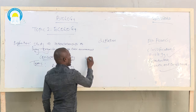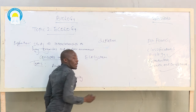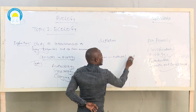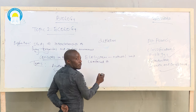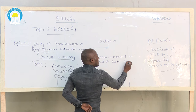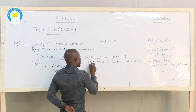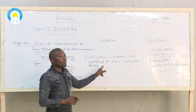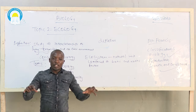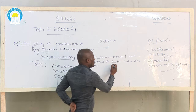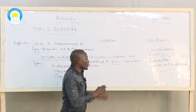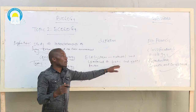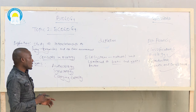The next term is ecosystem. An ecosystem is a natural unit composed of biotic and abiotic factors whose interactions lead to a self-sustaining system. When I talk about biotic, I mean living conditions. When I talk about abiotic, I mean physical or environmental factors. So a natural unit made up of biotic and abiotic factors whose interactions lead to a self-sustaining system.